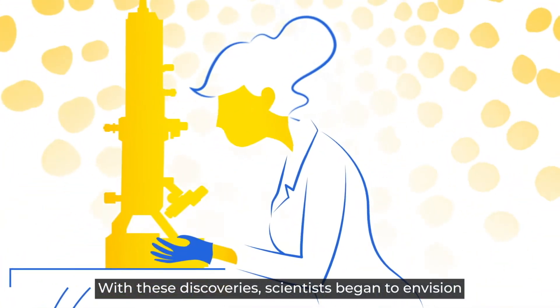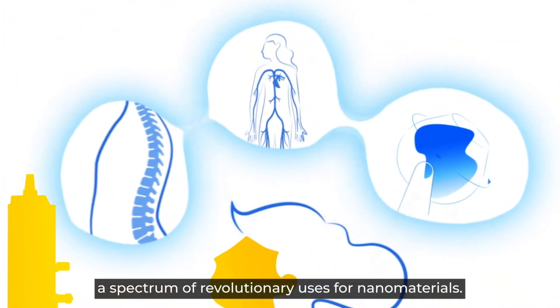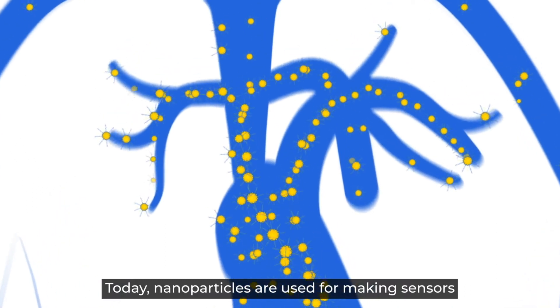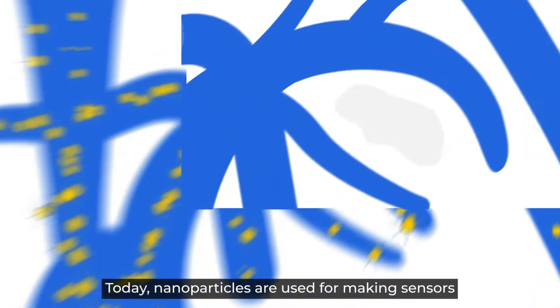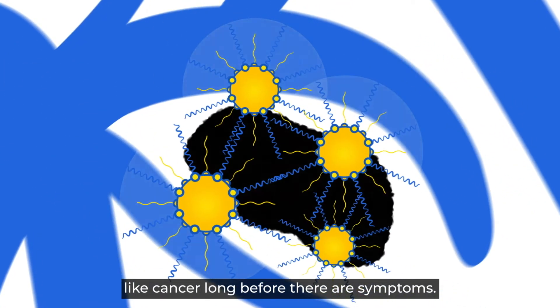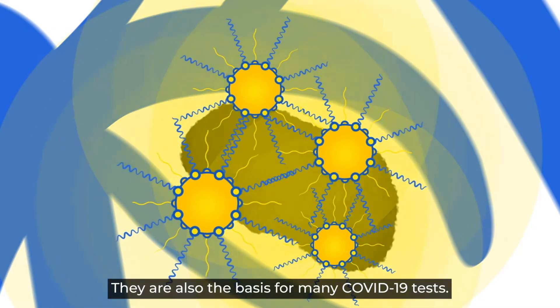With these discoveries, scientists began to envision a spectrum of revolutionary uses for nanomaterials. Today, nanoparticles are used for making sensors able to detect genetic disorders and diseases like cancer long before there are symptoms. They are also the basis for many COVID-19 tests.